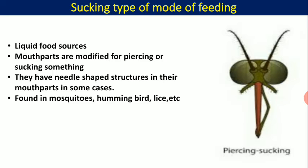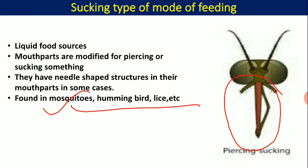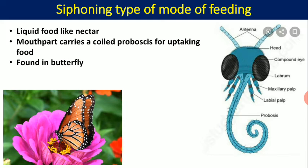The sucking type of feeding mechanism is found in mosquitoes, hummingbirds, and others. These organisms possess a special needle-like structure. In the case of a mosquito, it inserts this structure by penetrating the skin and collects blood from the body. This is known as the sucking type of feeding.